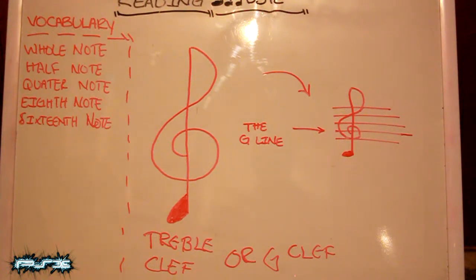You could call this the treble clef or the G clef. The reason we call it the treble clef or the G clef is because the treble clef denotes or tells you what range that your instrument is going to be playing in.